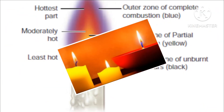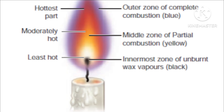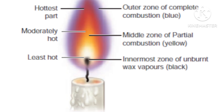A flame has four different zones: first, the zone of non-combustion — the dark zone; second, the zone of incomplete combustion — the luminous zone; third, the zone of complete combustion — the non-luminous zone; and fourth, the blue zone.